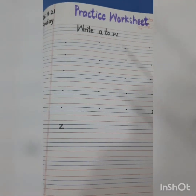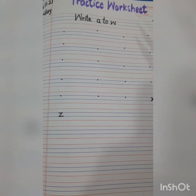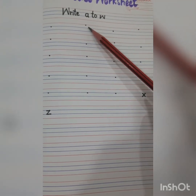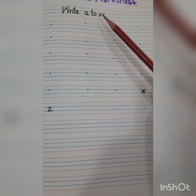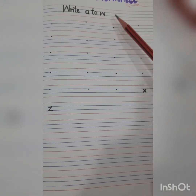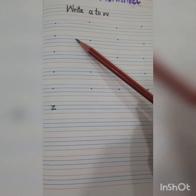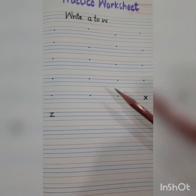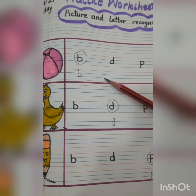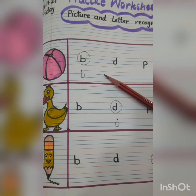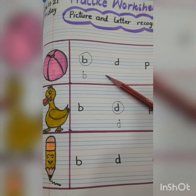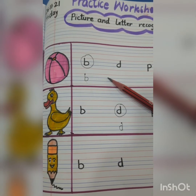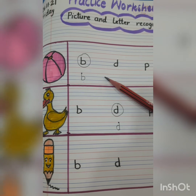Then children you have to do this practice worksheet also, where you have to write small a to small w — hamnei w tak finish kya, yaan aap likhenge. So dear children complete your worksheets and then send it to me. Thank you. Have a nice day. Bye bye.